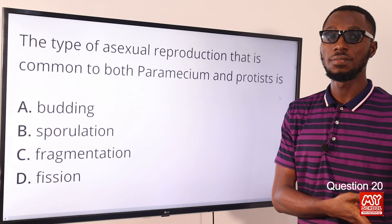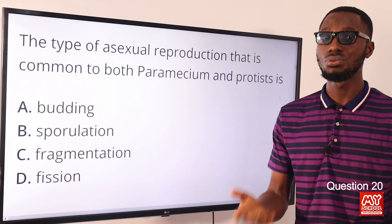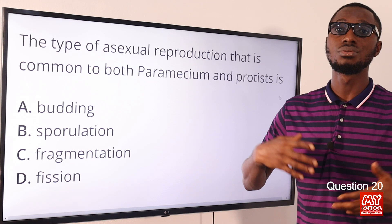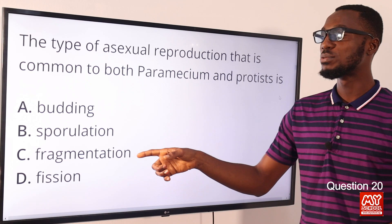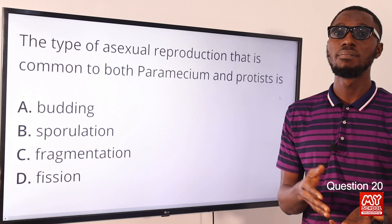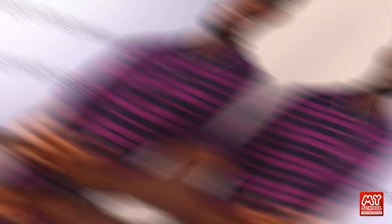Fission: we can have binary fission as in bacteria producing two daughter cells, but in fission you can have more than two offspring. Fission is common to protists - for instance amoeba, where the adult cell grows to its maximum size then divides into two or more daughter cells. Though paramecium can also reproduce sexually through conjugation, what is common to both paramecium and protist is option D, fission.